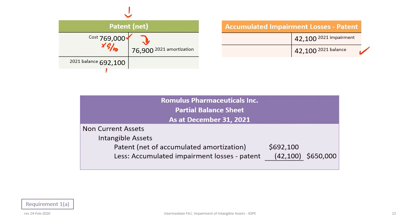On the balance sheet under non-current assets — intangible assets — the patent is shown at a net accumulated amortization value of $692,100. The accumulated impairment losses — patent of $42,100 is then deducted from that, giving us a net carrying value equal to the fair value of $650,000.